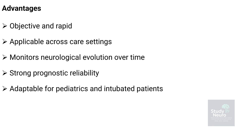The Glasgow Coma Scale remains one of the most practical tools in clinical neurology. It's objective and quick to perform, allowing rapid assessment in emergencies and routine monitoring alike. It's applicable across all care settings, from the roadside to the intensive care unit, and helps track neurological changes over time with consistency. The scale also offers strong prognostic value, aiding in outcome prediction and treatment planning. And with modified versions, it's adaptable for pediatric and intubated patients, ensuring universal relevance in neurological assessment.